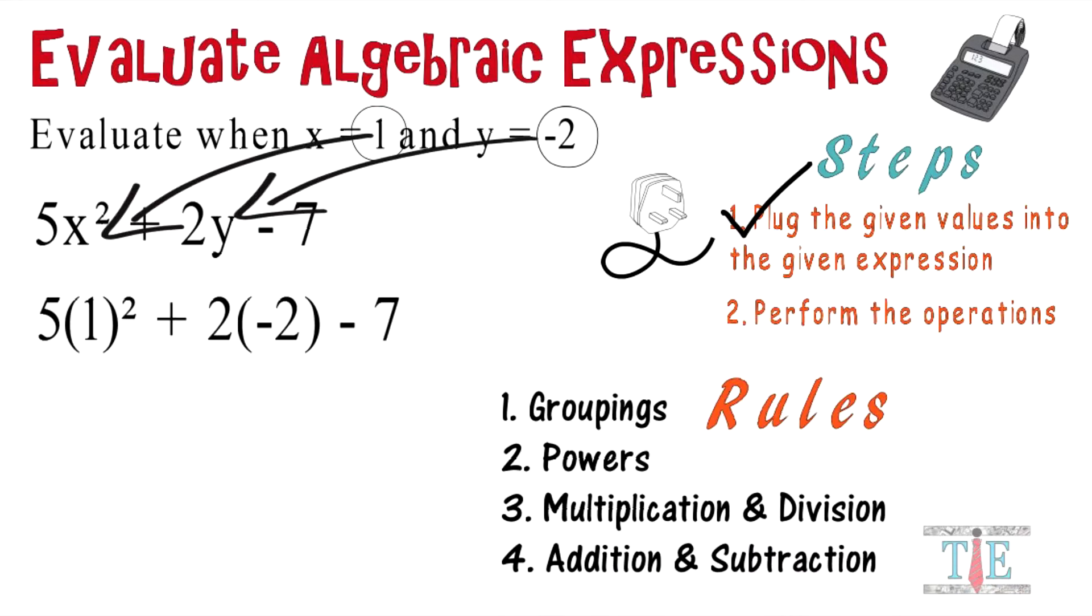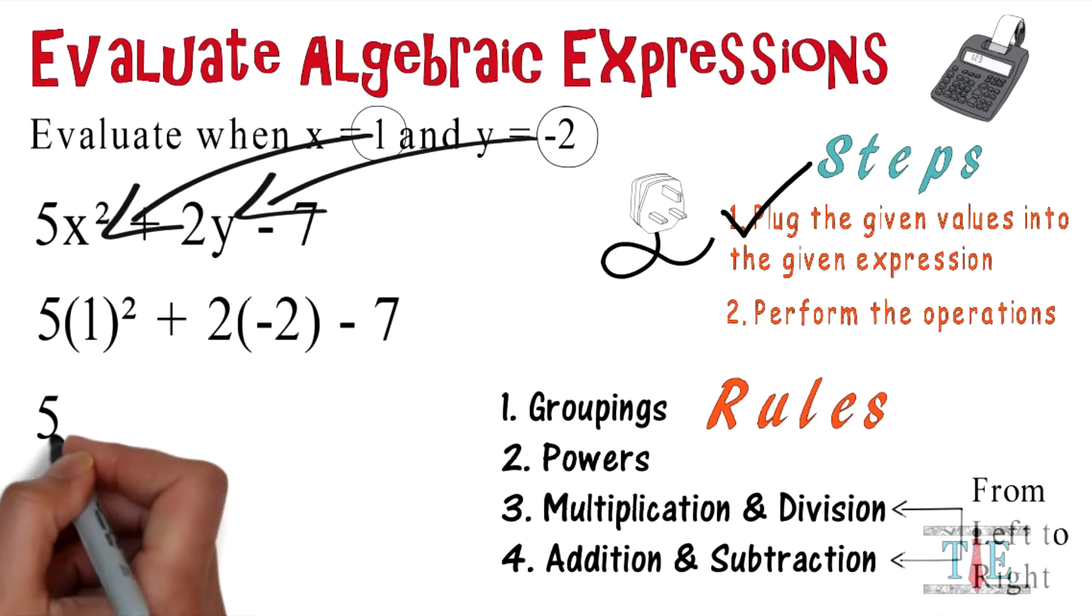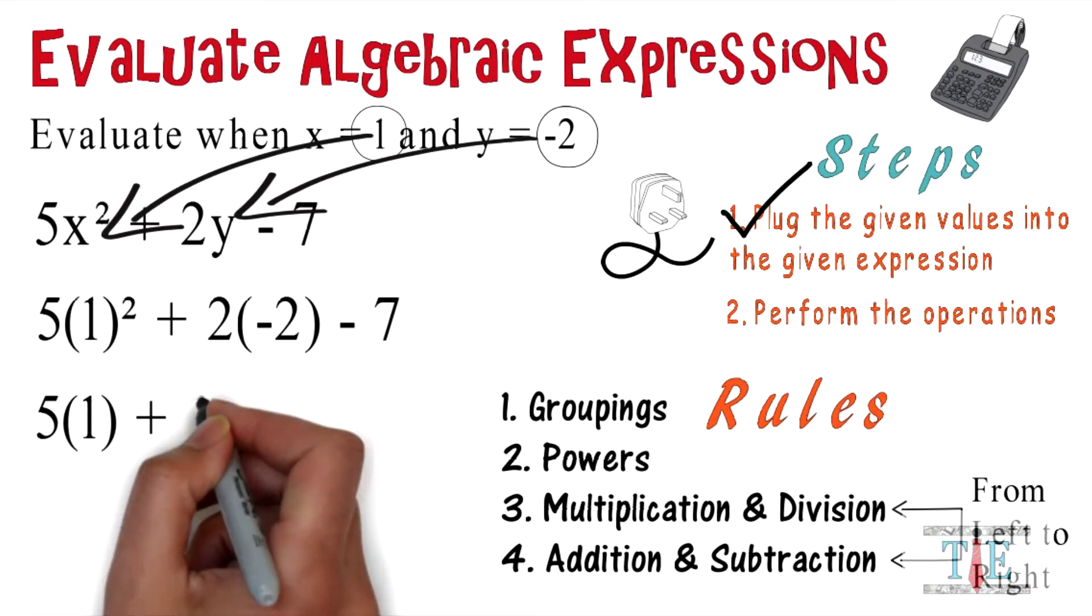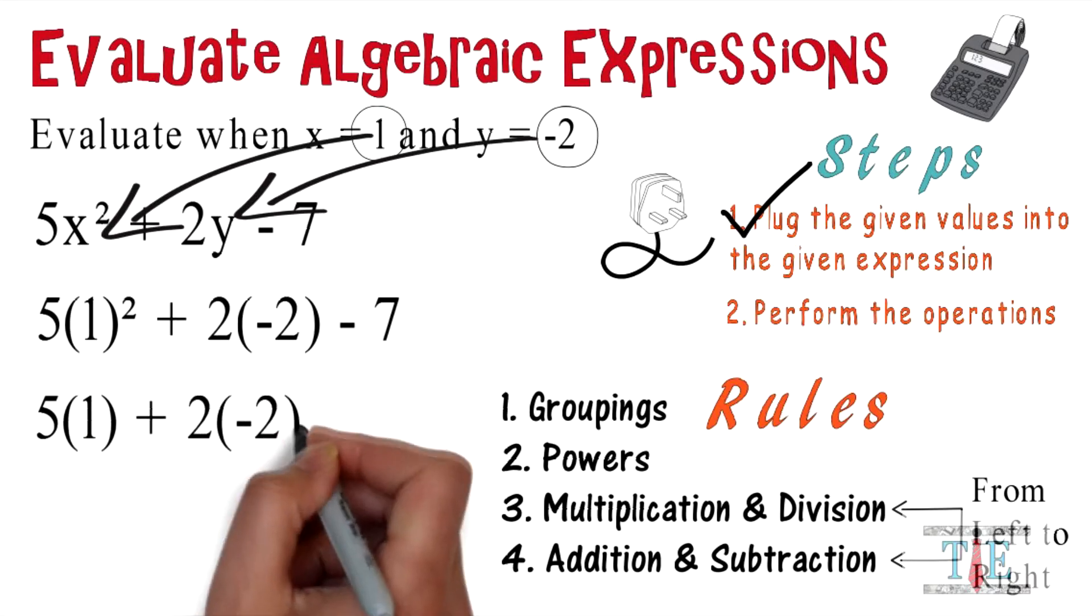Don't forget, when dealing with multiplication and division, and addition and subtraction, that you are going to actually work from left to right. Meaning if division comes before multiplication left to right, it will go first. The first thing we have to evaluate is actually our power. 1 squared is going to give us 1.